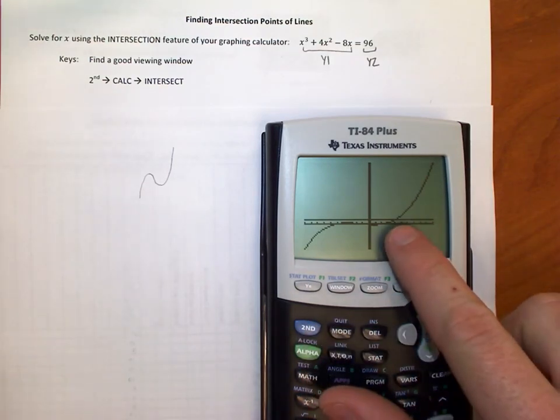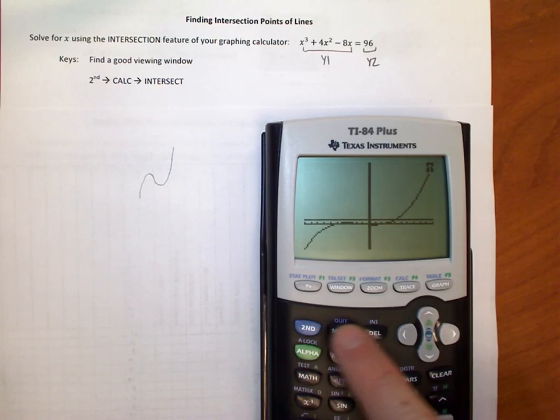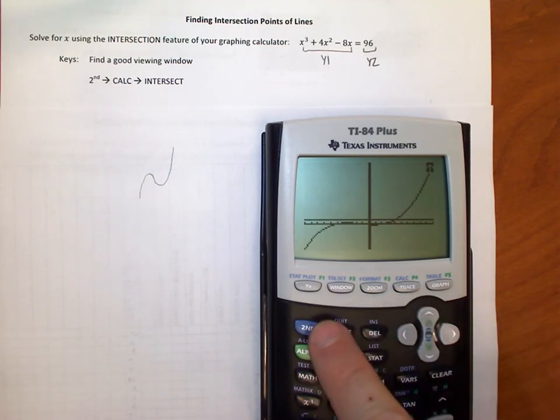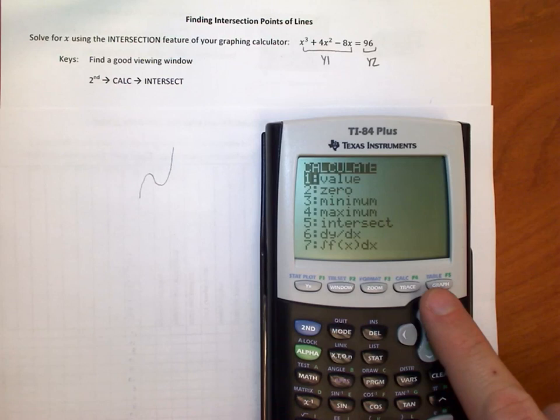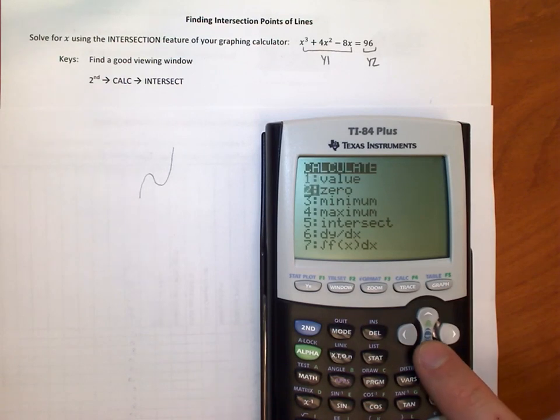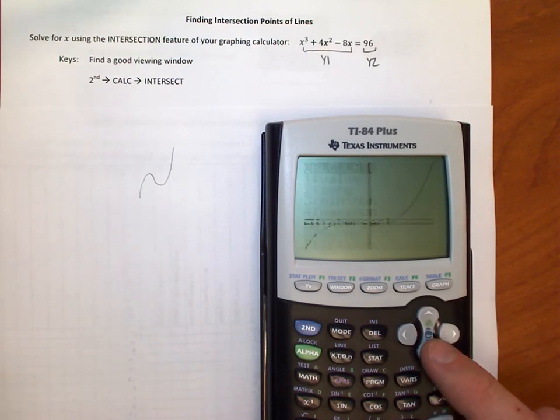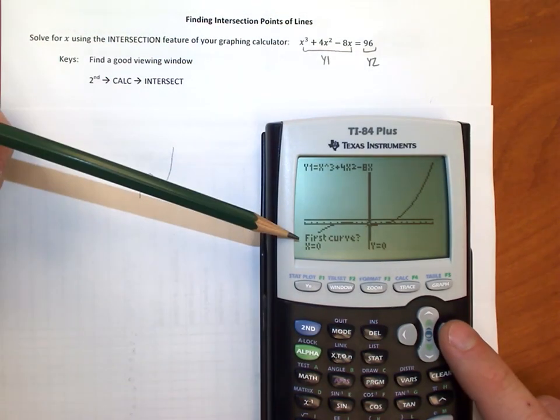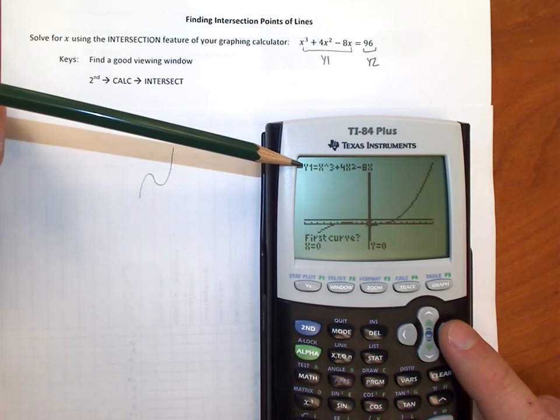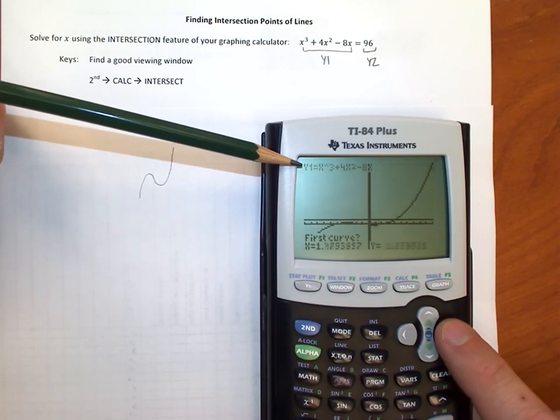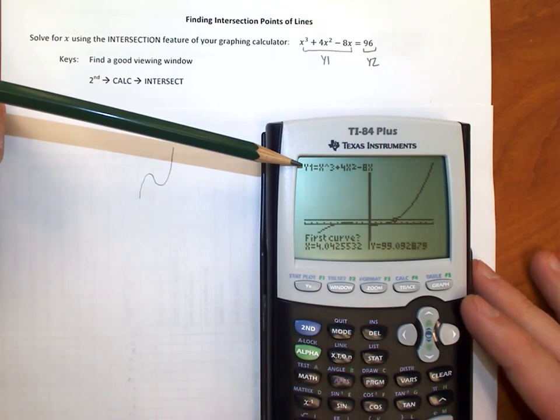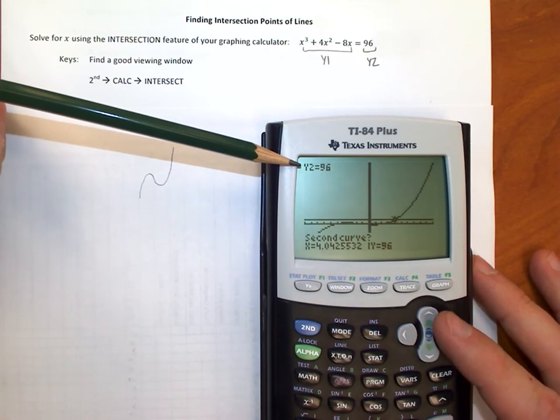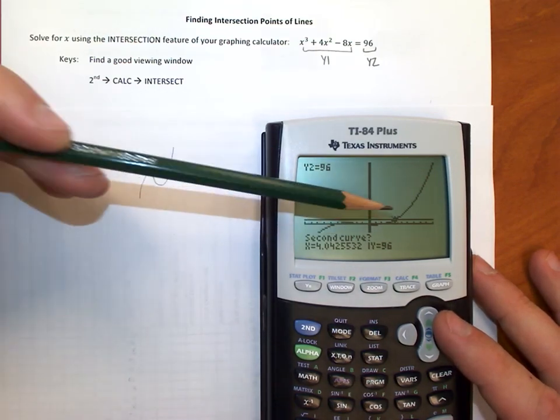So here we go. Ready? In order to find that intersection spot, I go second, calculate. It's in blue. That's why I hit second to get to it, right? Everything is color coded. And I'm going to option five, which is the intersect feature. And it's going to ask me, which lines am I talking about? It's going to ask for the first line and the second line. So the first curve I'm interested in is this y1, right? And all I'm going to do is I'm going to scroll over till I get somewhat in the neighborhood of the intersection point. I'm going to hit enter.